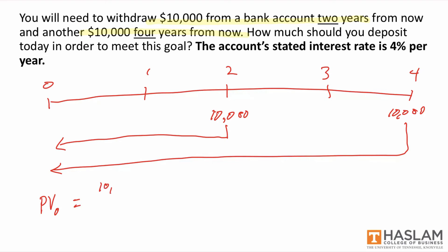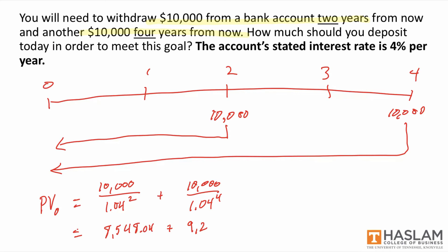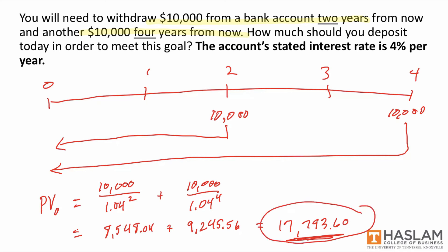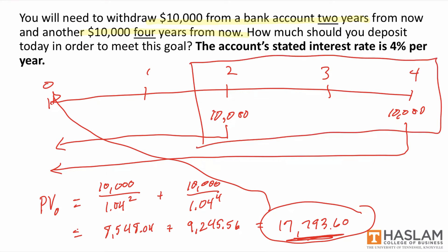The answer is just the sum of each cash flow individually discounted. The present value is the time two cash flow discounted two periods plus the time four cash flow discounted four periods. We know from before what these individual values are, and adding them up, we get $17,793.60. The interpretation is that we're indifferent between $17,793.60 right now at time zero and the combination of the two $10,000 cash flows in years two and four respectively.